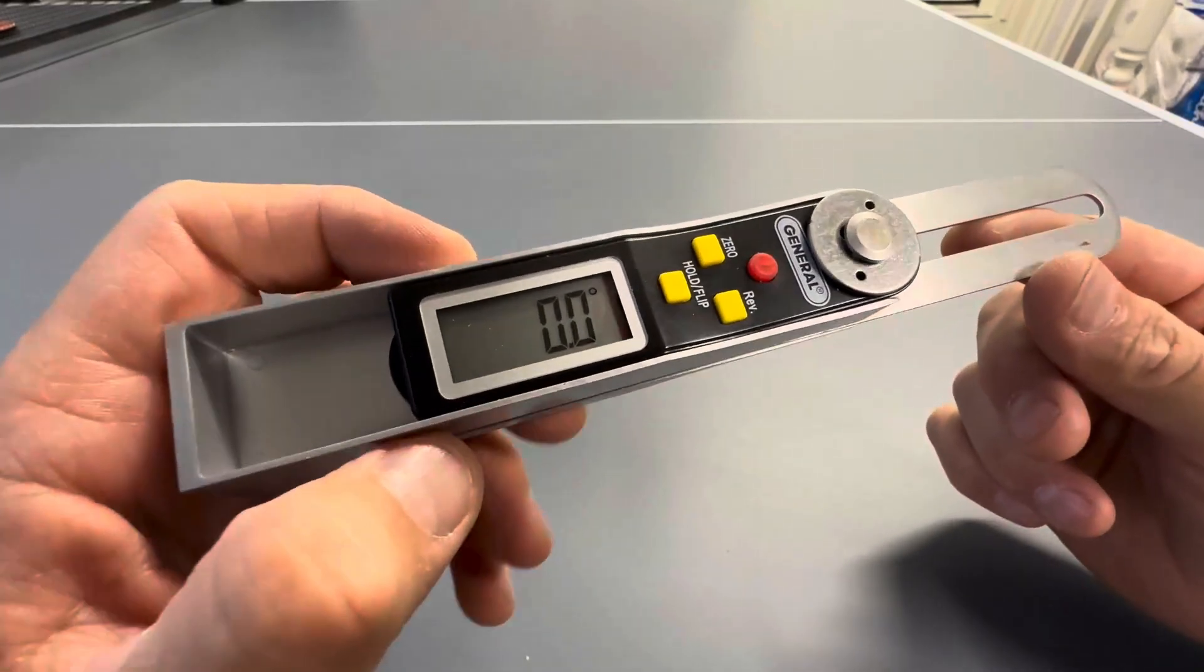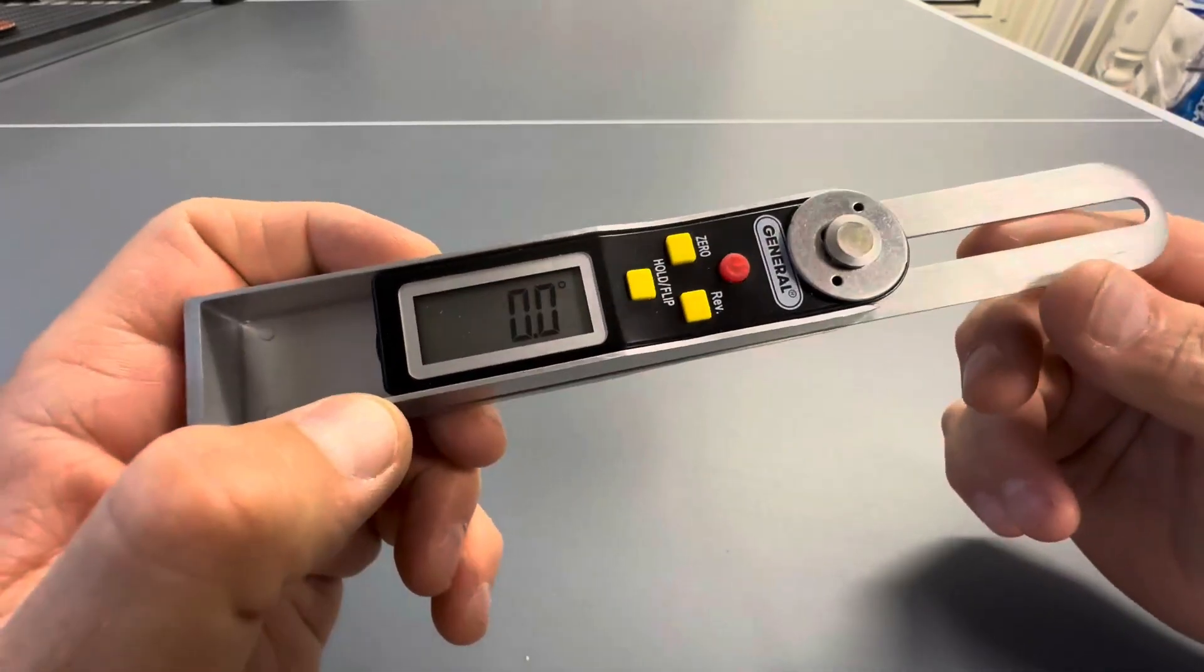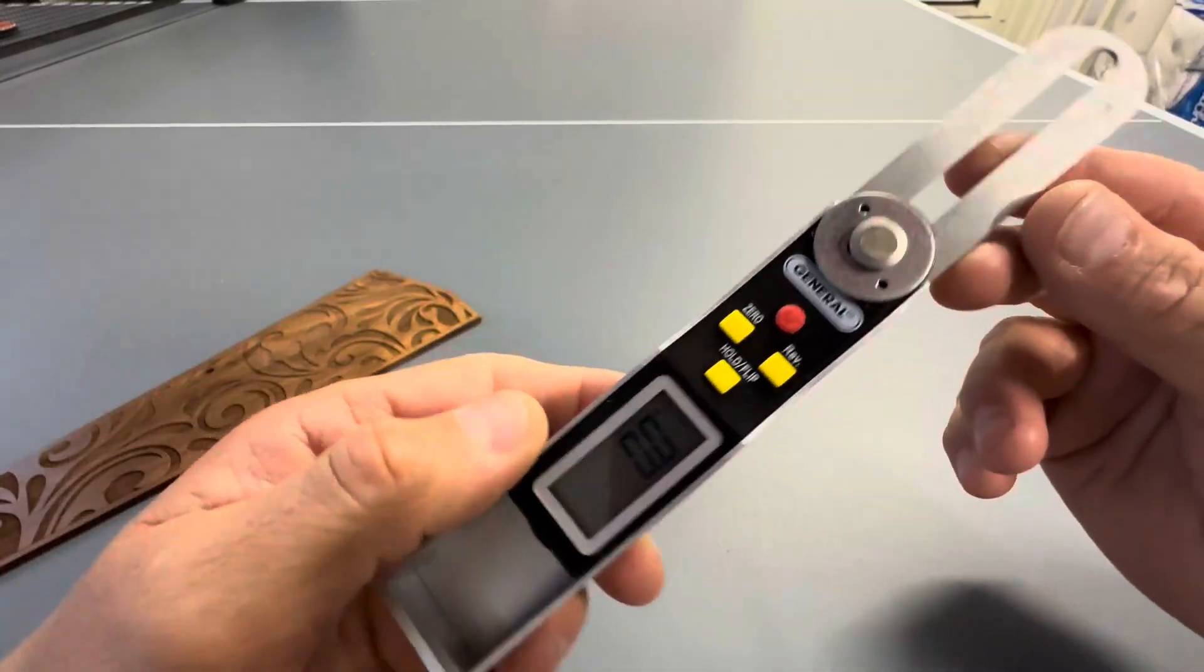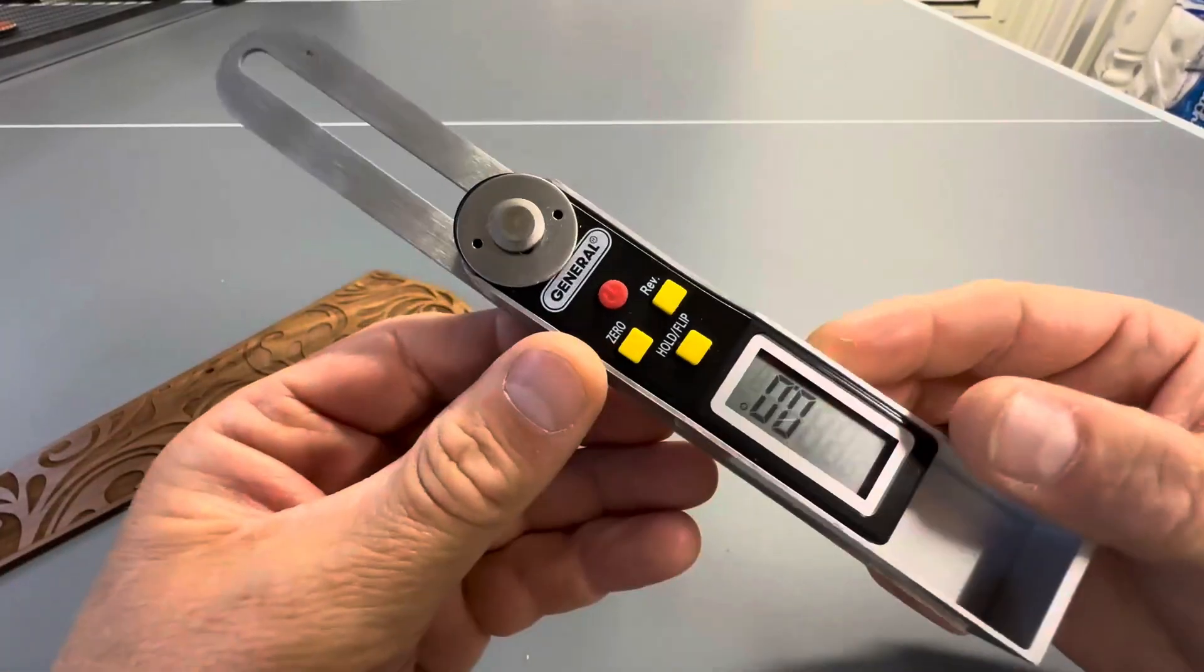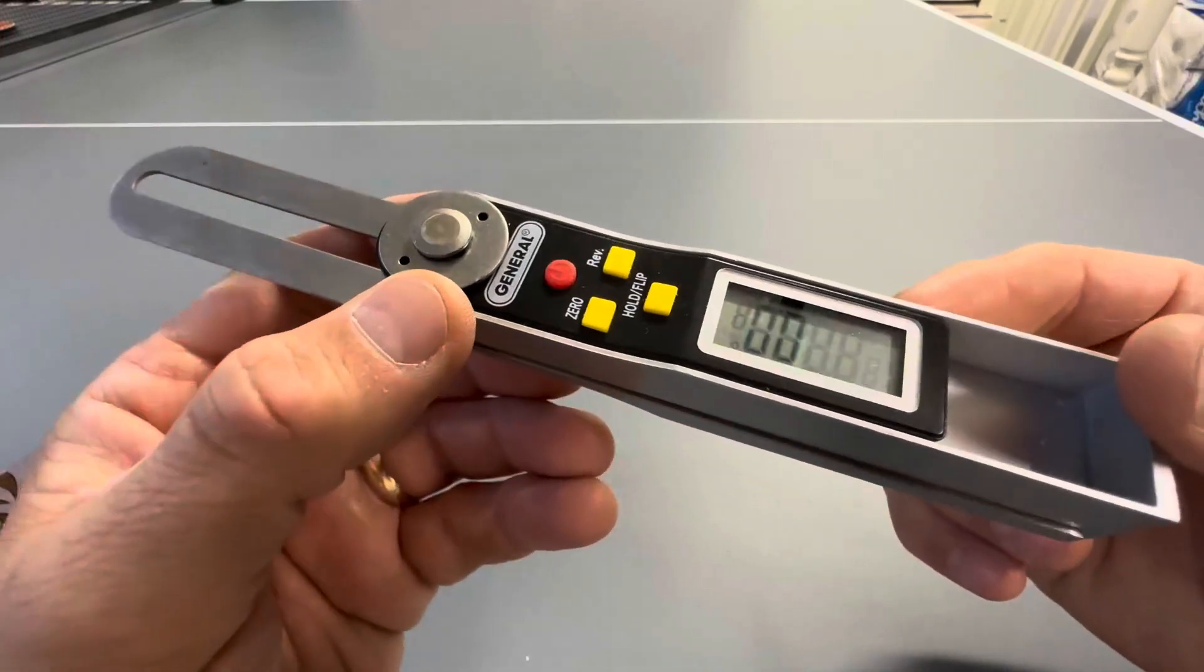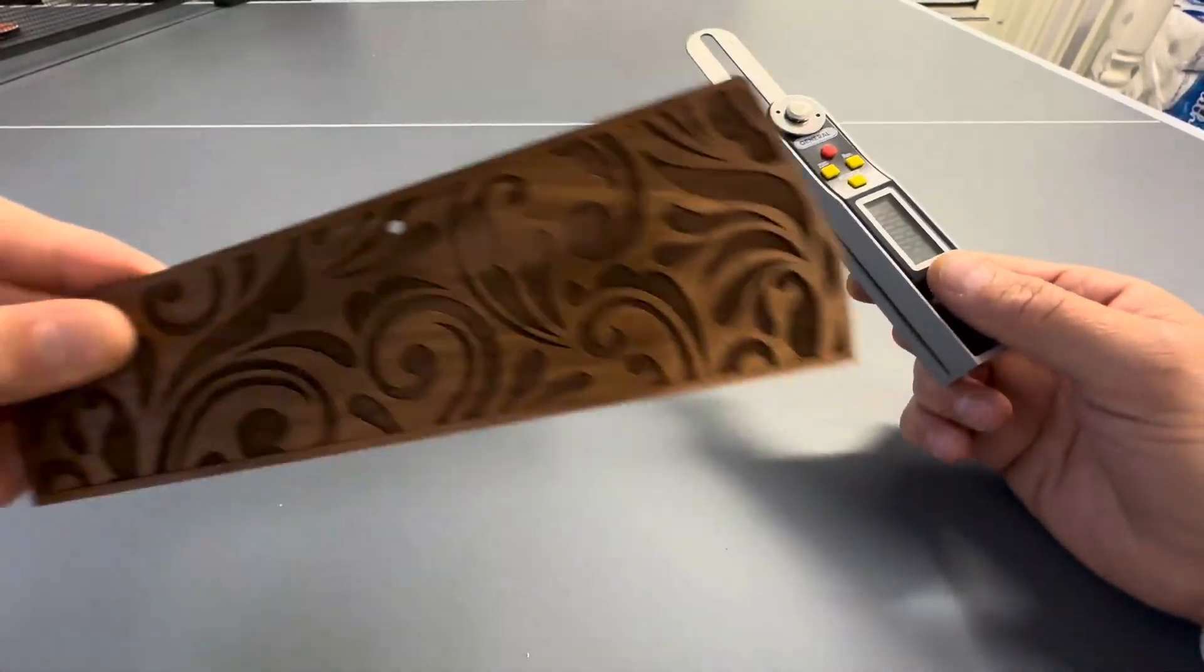Hello, today I'm reviewing my General Anglizer tool. This is a digital tool that enables you to measure different types of difficult angles. I use this in designing these wood pieces that you see here.